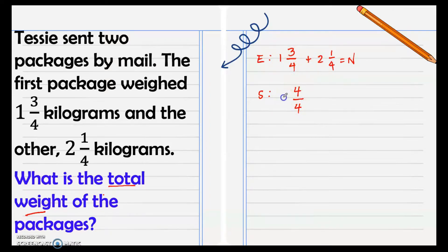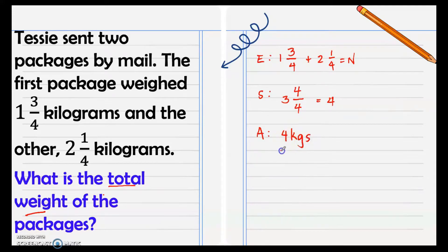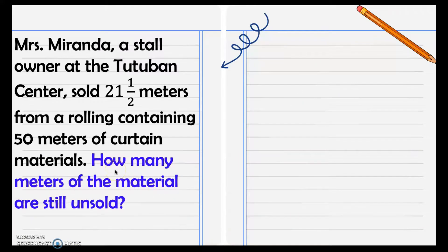We also add the whole numbers: one plus two is three. This fraction four over four is an improper fraction, so we regroup — four over four equals one — then three plus one equals four. Therefore our final answer: the total weight of the packages is four kilograms.